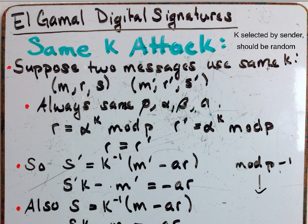So, suppose two messages use the same K. We're going to call the first message M, R, S and the second message M prime, R prime, S prime. Now remember that these both use the same P, alpha, beta, and A. This is always the case, remember this goes with the person that is sending the message. It's only the K that regularly changes.